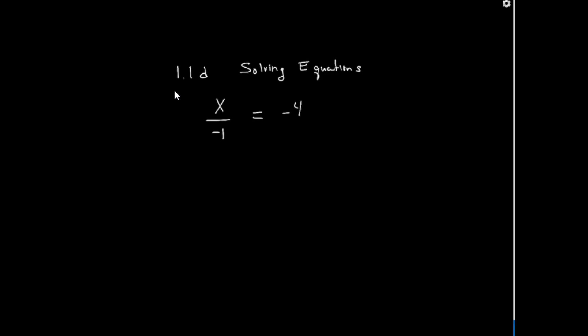So what happens when this x is being divided by negative 1? To undo that, I just multiply both sides of the equation by negative 1, and that leaves me with x equals positive 4. That happens because negative 1 divided by negative 1 equals positive 1.